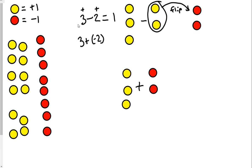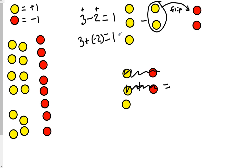3 minus 2 equals 1, so if I make up another way of doing this it better equal 1. I take the second number and flip it, and it becomes an addition problem. Now it's an addition problem: I have a yellow chip and a red chip — they make 0. I have another yellow chip and a red chip — they make 0. I have one yellow left, so this is 1 also.